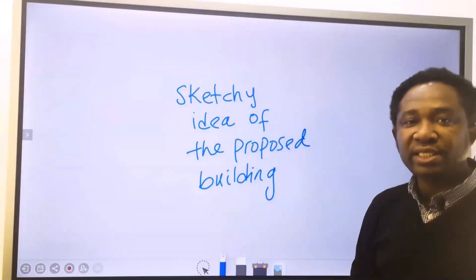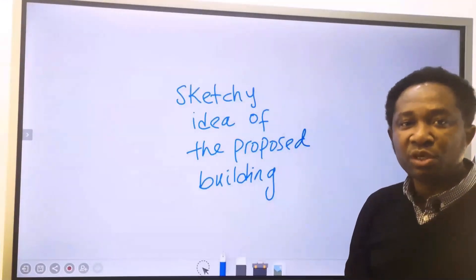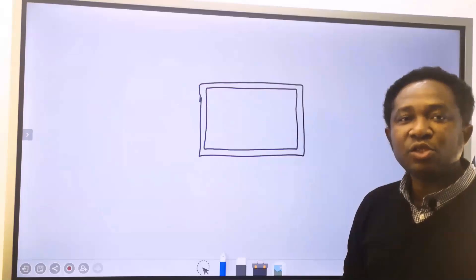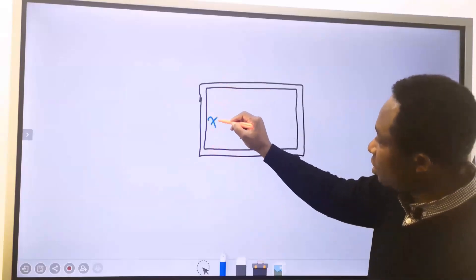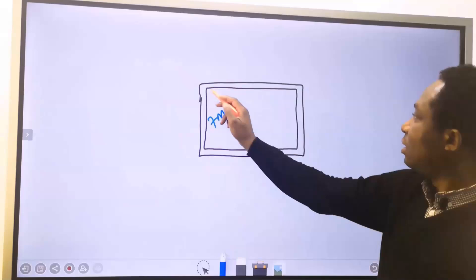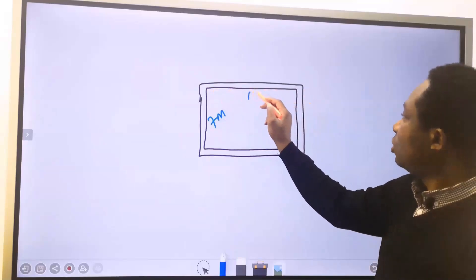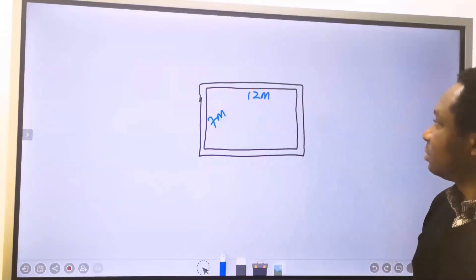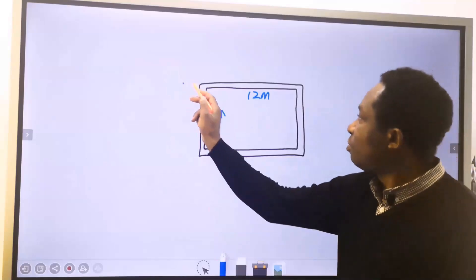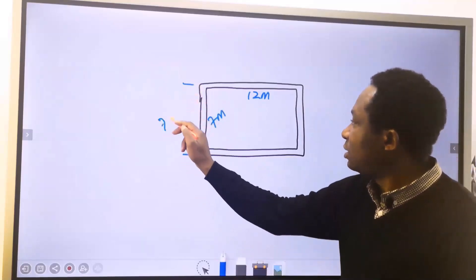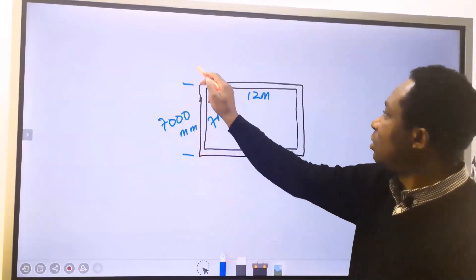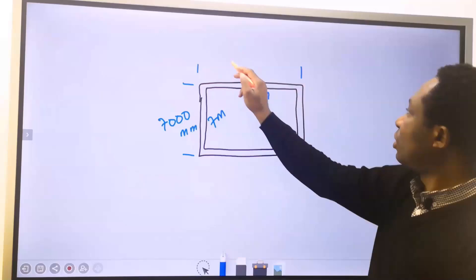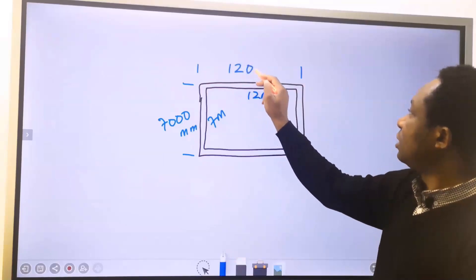This will be the sketchy idea of the proposed building. Let's assume this is going to be the proposed building, and this will be 7 meters, while this will be 12 meters. That is, from this point to this point is 7,000 millimeters.